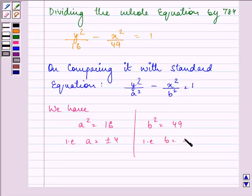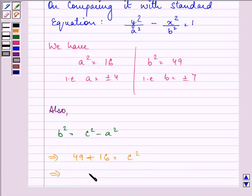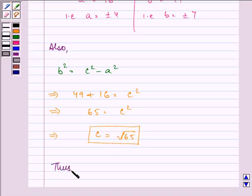Also, we know that c² = b² + a². Let us quickly find out the value of c². It is 49 + 16 = c², that is equal to 65 = c², that gives us the value of c as √65.